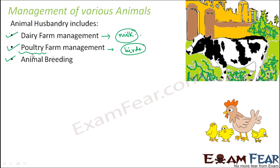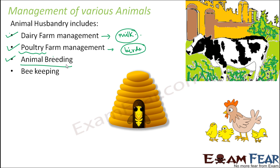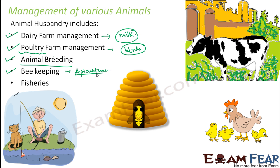Next is animal breeding, where we talk about the care taken of animals when they act as a source of food. Then beekeeping — honey bees give us honey, which is of great significance to human beings. Taking care of honey bees and maintaining beehives is important, and this is also known as apiculture. The last one is fisheries — fishes are a very common source of food and are very rich in nutrients like proteins. Fishery covers how to catch fish, sell them, and take care of them.